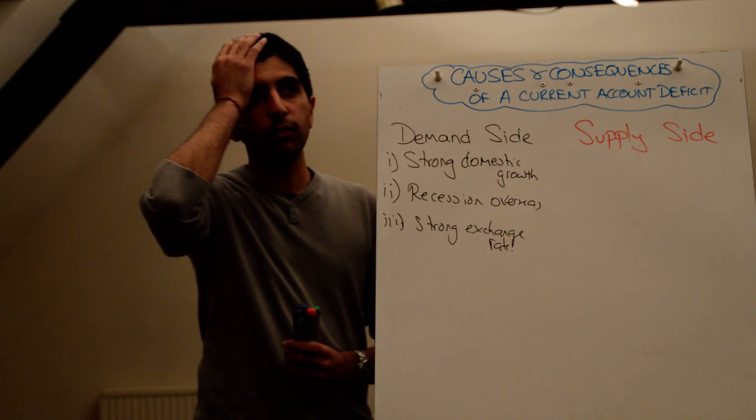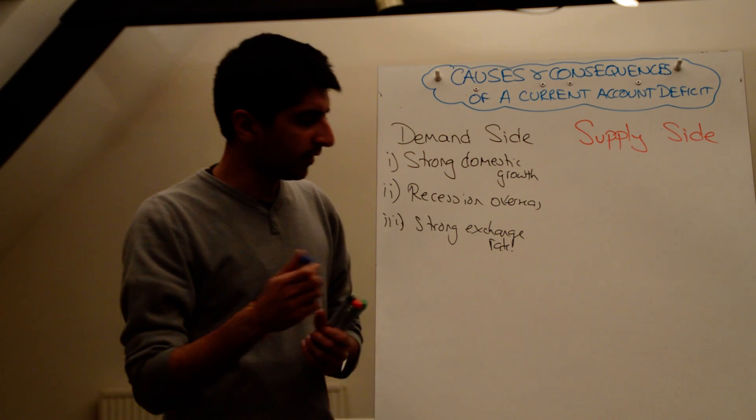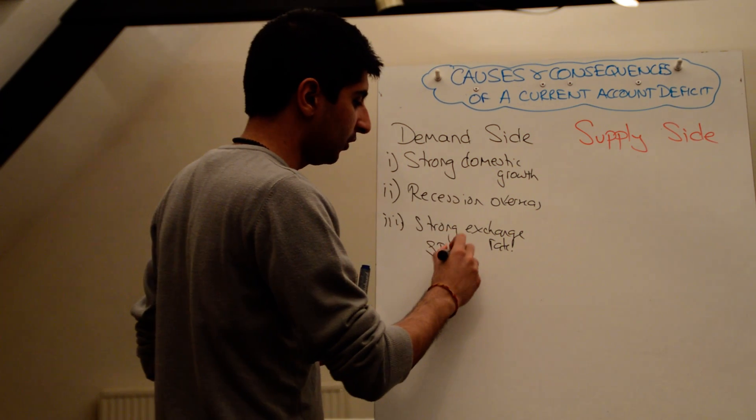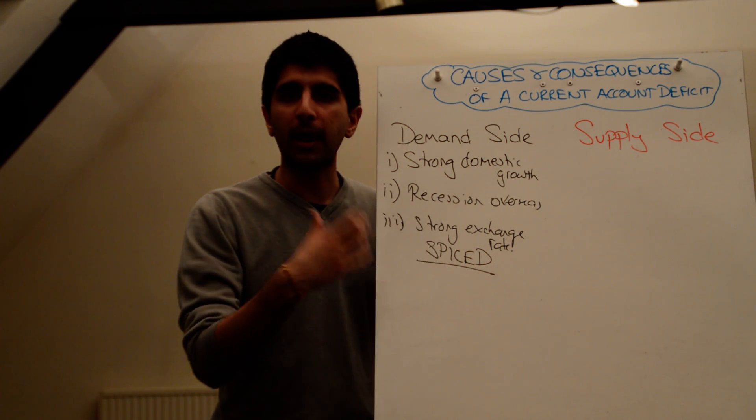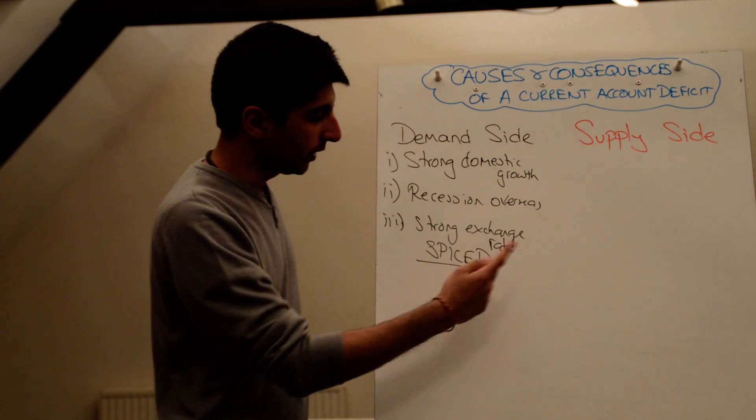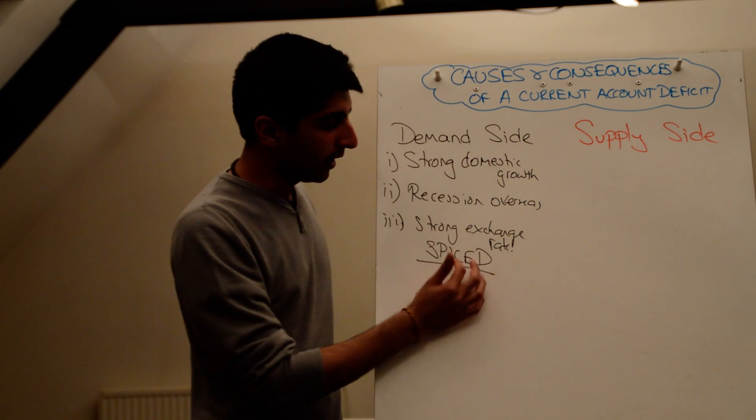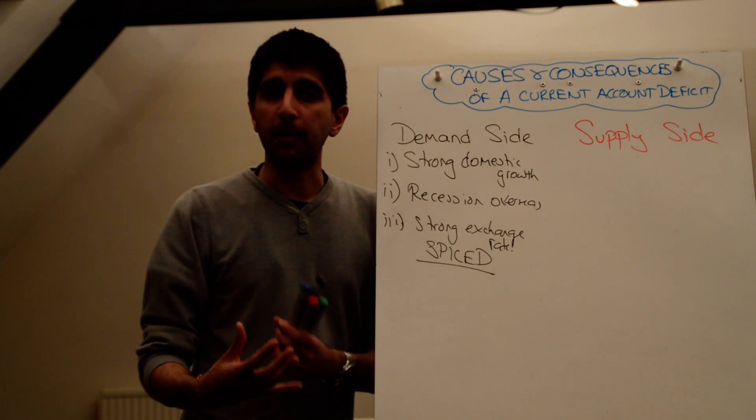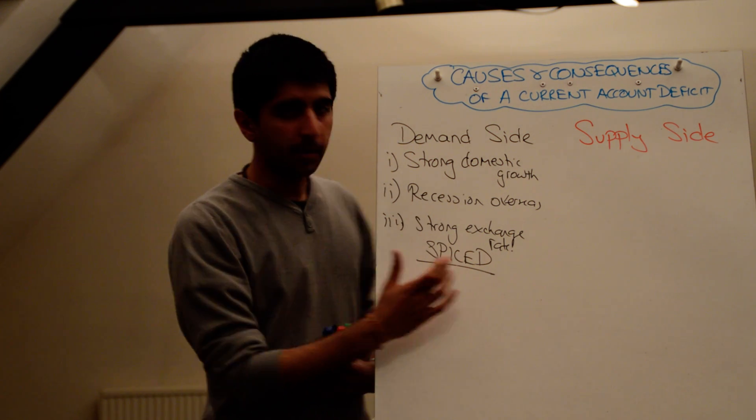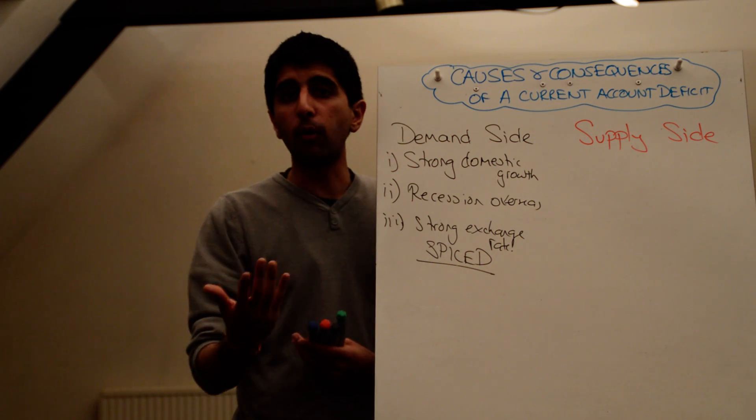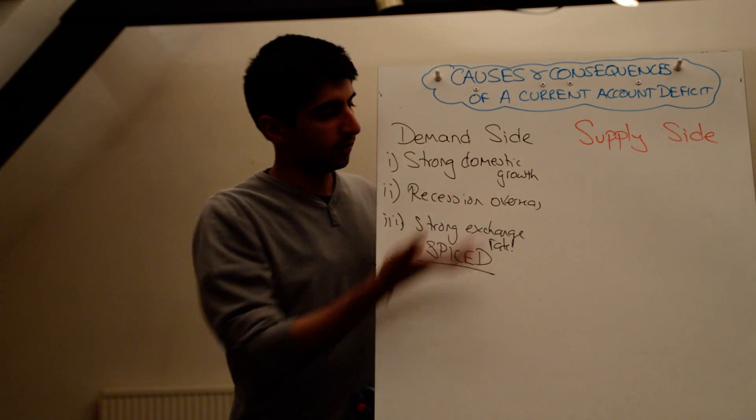And if there is a strong exchange rate, right, strong exchange rate means imports are going to be cheaper and exports are going to be more expensive. I'm going to write this down now. In another video, I'll explain this. But just think to yourself, right, spiced. If you want to understand what that means, watch my video on exchange rates to understand. I'll talk about the easiest way to understand exchange rates. So, here's spiced. Strong pound or strong currency makes imports cheap and exports dear. Dear just means expensive. So, if exports are expensive, we're probably not going to export very much. And if that happens, the revenue we get from exports, the amount of money brought in, reduces. At the same time, imports are really cheap now. So, we might import more. In which case, the money we spend, the money leaving the country on imports actually increases. Which then, again, makes our current account position worse. So, three demand side reasons.